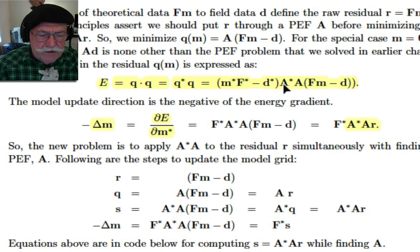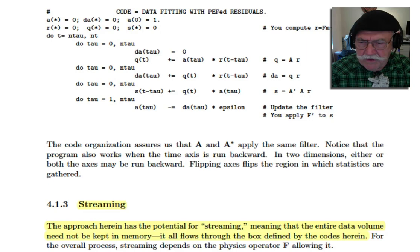So you make this new quadratic form, which has got this A star A in the middle. And now we need to find the direction to go. And so we take the gradient and the derivative of E with respect to M. Here we got the derivative of E with respect to M. And you get the answer. And we need to apply A star A to the residual. So from the residual, we know how to find A, all we need to do is apply A star. And we're hoping we don't have to save any filters or anything like that. And it turns out we don't, we don't have to, we're making zillions of filters and we're not saving them. We don't need to save them. This does it. This applies A star A.